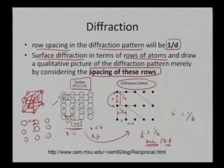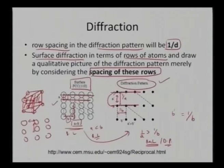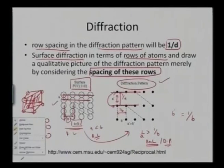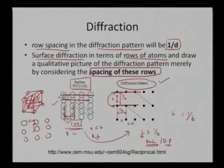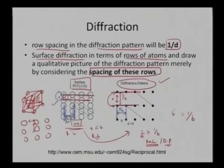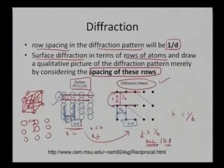That part is retained in the diffraction pattern: the row spacing in the a direction, which was close in real space, is now much farther apart in reciprocal space, while the spacing of b has decreased. In the real space I had a < b, but in the diffraction pattern my a' has increased in comparison to b'. That is what we see from the diffraction pattern when considering only the rows.